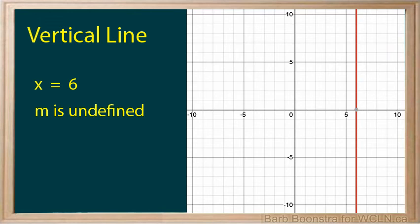Here is another vertical line. The equation of this line would be x equals 6, and its slope would be undefined.